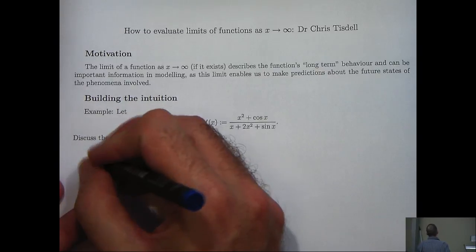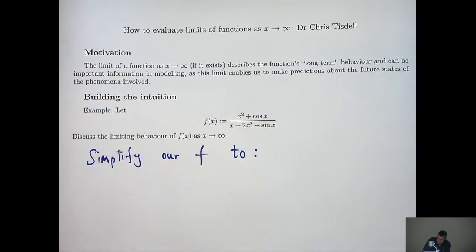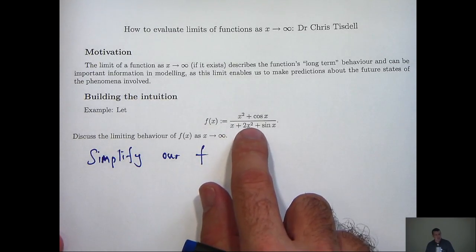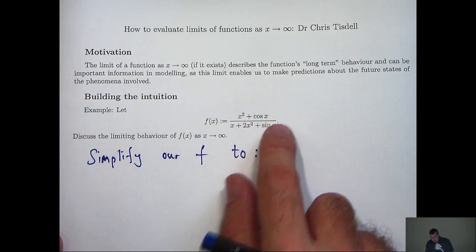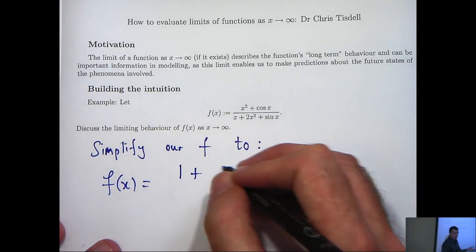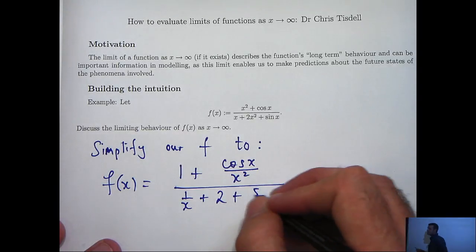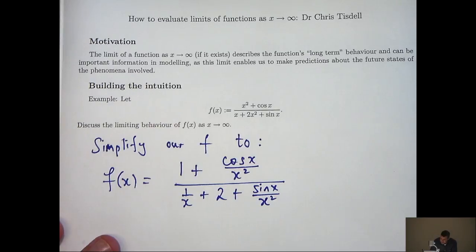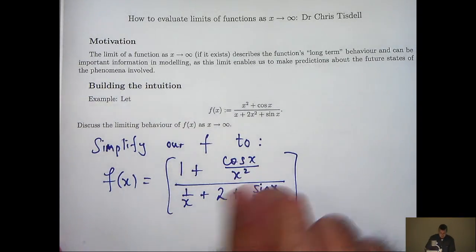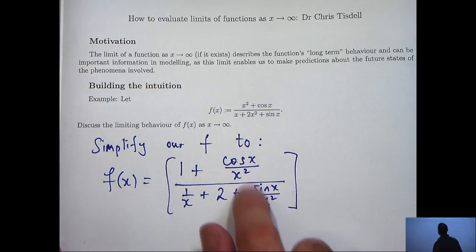So what we're going to do is simplify. I recognise that the highest power in the denominator involves x², so I'm going to divide top and bottom by x². Dividing each term by x², I come up with this simplified form. Now you might think — well, you haven't simplified that, it looks more difficult. But if I now take the limit of each individual term, I'll get a 1 here, a 2 here, a 0 here, and it's just these two remaining terms that have to be carefully examined.